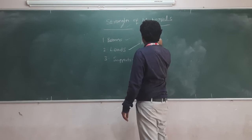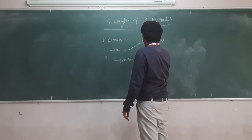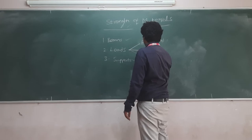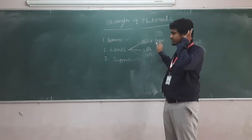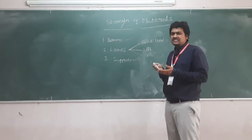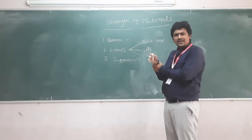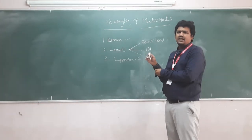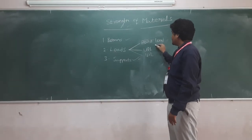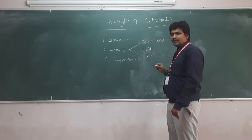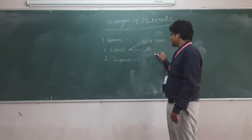We have three different types of loads. First is point load. Second is UDL — uniformly distributed load. Third is UVL — uniformly varying load. Basically, all the different types of loads like seismic loads, live loads, dead loads, and wind loads acting on any structure will be categorized into these three different types.